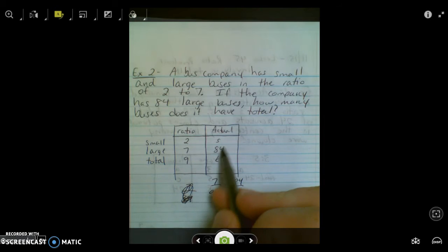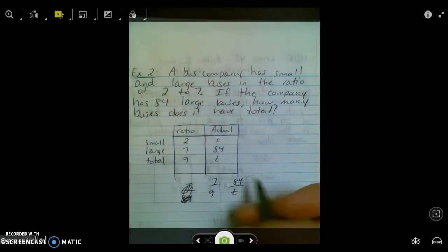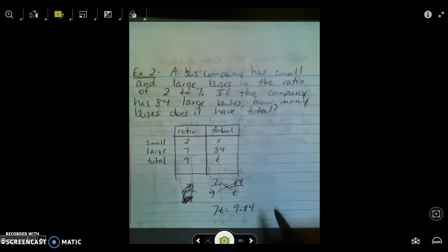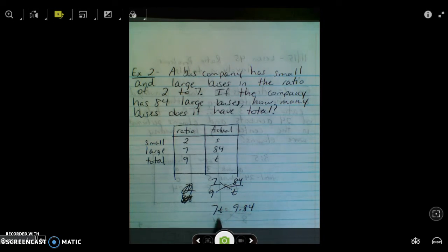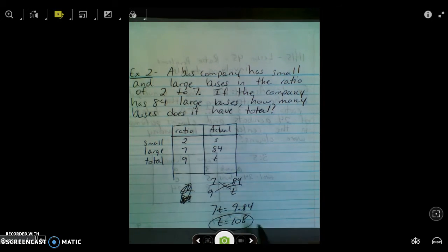And then large total, the actual numbers, again, proportion because they are equal. Seven T equals nine times 84. Multiply those, divide by seven, get T equals 108. So there are 108 total buses in this fleet.